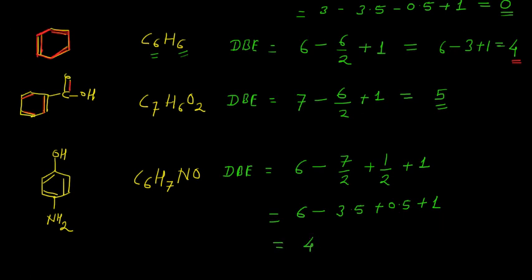It means that in this structure we have 4 double bond equivalents, and we can see this in the structure: this is the 1st double bond, 2nd double bond, and this is the 3rd double bond, and there is 1 ring. It means that in this structure 4 double bond equivalents are present. Thank you.